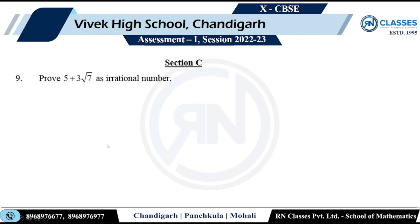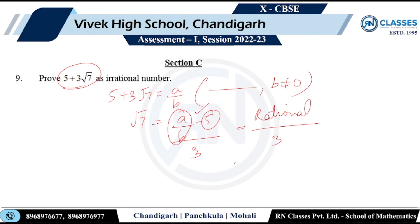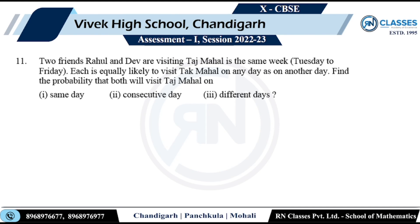Prove that 5 + 3√7 is irrational using the method of contradiction. Assume it is rational, so 5 + 3√7 = a/b where b ≠ 0. Since √7 is irrational, isolate it: √7 = (a/b − 5)/3. The right-hand side is rational (rational minus rational, divided by 3), but the left-hand side is irrational. This is a contradiction, so the assumption is wrong. Hence 5 + 3√7 is irrational.